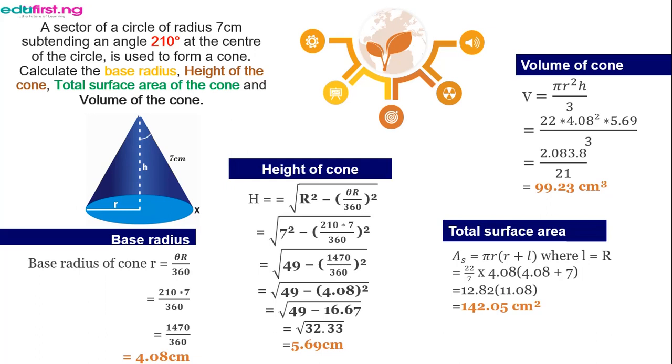An example, quickly. The sector of a circle of radius 7 cm subtending an angle 210 degrees at the center of the circle is used to form a cone. Calculate the base radius, height of the cone, total surface area of the cone, and the volume of the cone. So, we get right away to it.